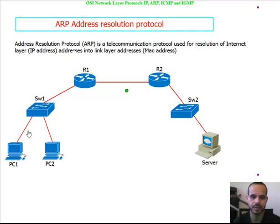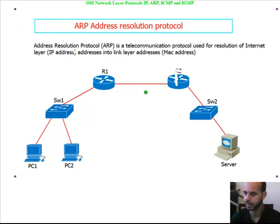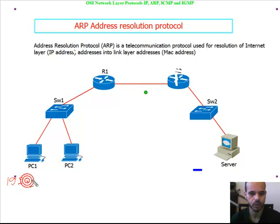The first thing ARP does is resolve the MAC address of PC2. So let's assign some IP addresses. PC1 will have the IP address of 192.168.1.1.